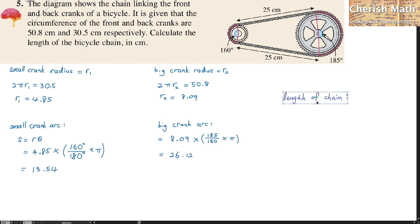I'm going to work out the final part, the length of the chain. That is 13.54 plus 26.12 plus 25 times 2, and it is 89.66 cm for the length of the chain. Problem solved.